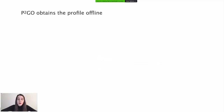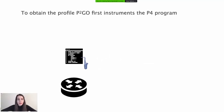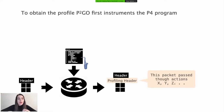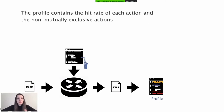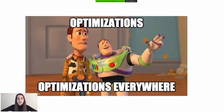P2Go obtains the profile offline. To do so, P2Go first instruments the P4 program. The instrumented program appends the path of each packet through the control logic as a header after its initial header. Next, P2Go runs the instrumented program on the traffic trace that the programmer has provided, and collects the output to construct the profile. Once the profiling is done, its insights can guide a broader spectrum of optimizations for compiling the program.